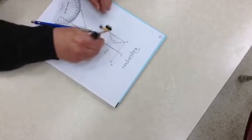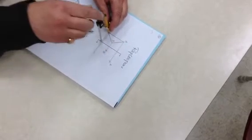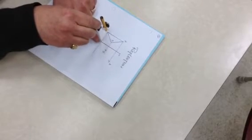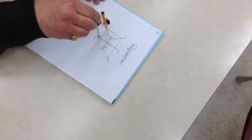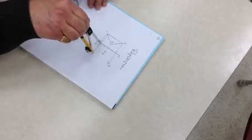And then I do the same thing from point C. Compass in at the reflection line. Open it up to point C. And there we've got our point C.